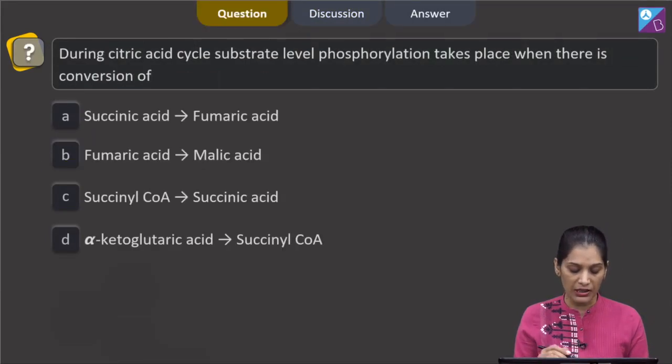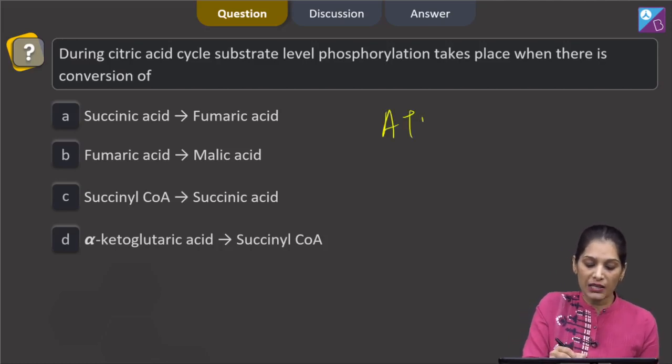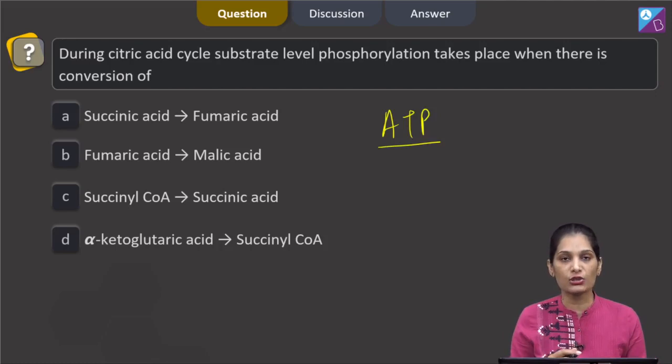Let us pick up the next question. This question says during citric acid cycle, substrate level phosphorylation takes place when there is conversion of... Before dealing with the question in detail, we should know what is substrate level phosphorylation. Substrate level phosphorylation is the direct ATP synthesis, means direct ATP is synthesized without forming the NADPH2, NADH2 or FADH2.